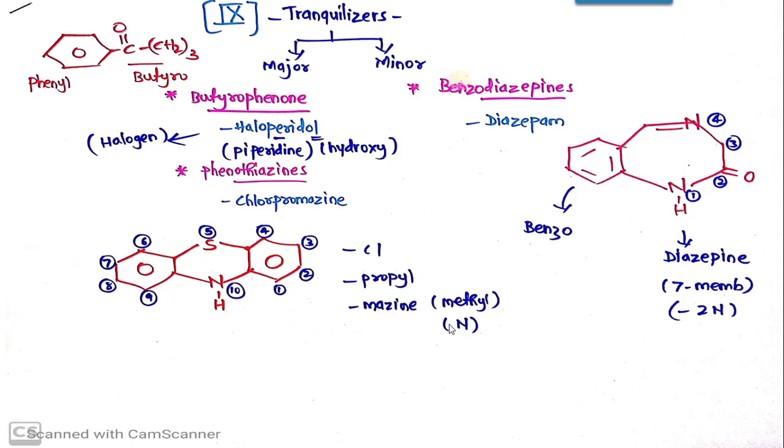You can think of the various substituents which are present on the Phenothiazine: chlorine is there, definitely propyl 3-carbon chain, and Ma is methyl. So definitely there is methyl substitution and Aza, nitrogen. We are going to talk about Chlorpromazine in detail.